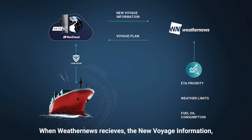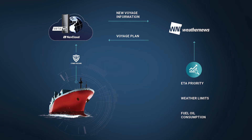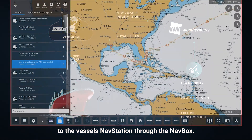When WeatherNews receives the New Voyage Information, the onshore routers will analyze the data and produce an optimized Voyage Plan. The Voyage Plan will then be delivered to the vessel's NavStation through the NavBox.